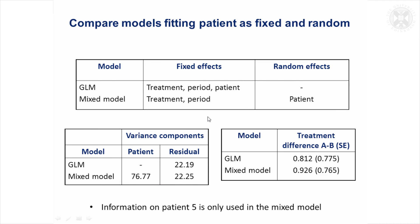The thing we're really interested in is the treatment difference and its standard error. This is a bit different between the models because we've taken into account that data isn't lost on patient five, who only had an observation on treatment A. We've gained a little in that the standard error is a bit smaller in the mixed model, so it's a bit more sensitive because it uses a little more information.